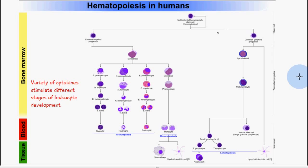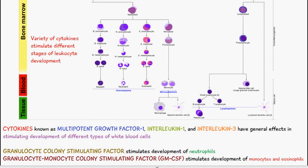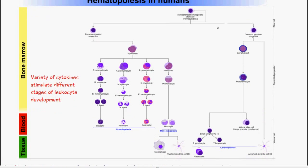To produce the agranular leukocytes, the hemocytoblast differentiates not into the common myeloid progenitor but into the common lymphoid progenitor. From here we can have the formation of a lymphoblast, then a pro-lymphocyte, and then either a natural killer T cell or a small lymphocyte. From the small lymphocyte it can differentiate into either a B lymphocyte or a T lymphocyte, and the B lymphocyte can further progress to form a plasma cell. This process is called lymphopoiesis.